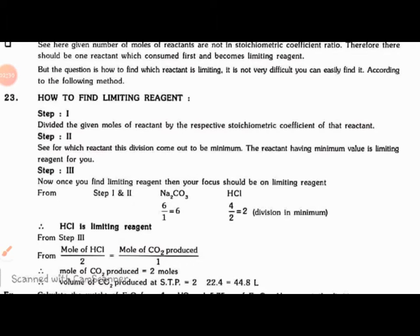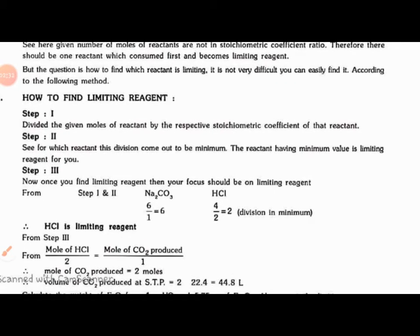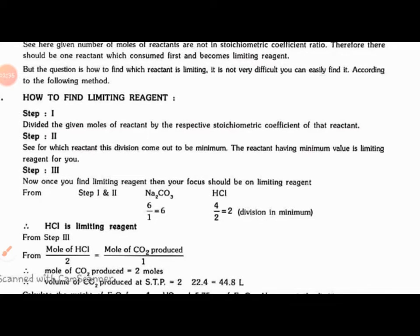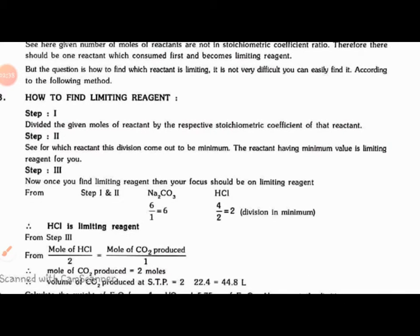Step 1: Divide the given moles of reactant by the respective stoichiometric coefficient of that reactant. Step 2: See for which reactant this division comes out to be minimum.